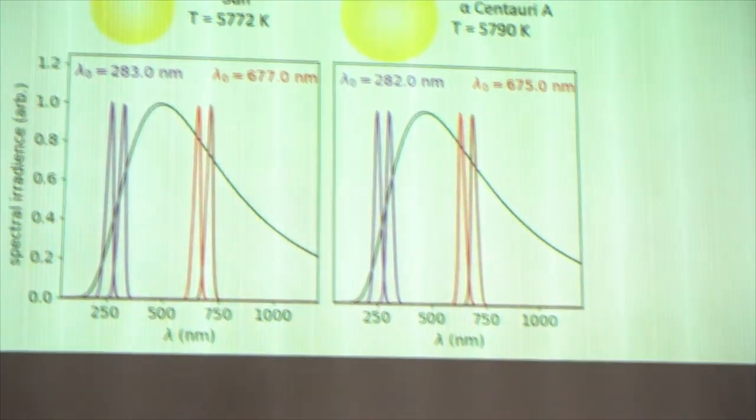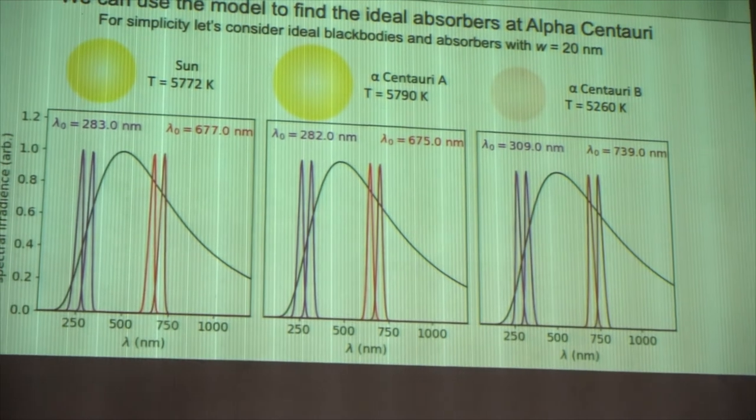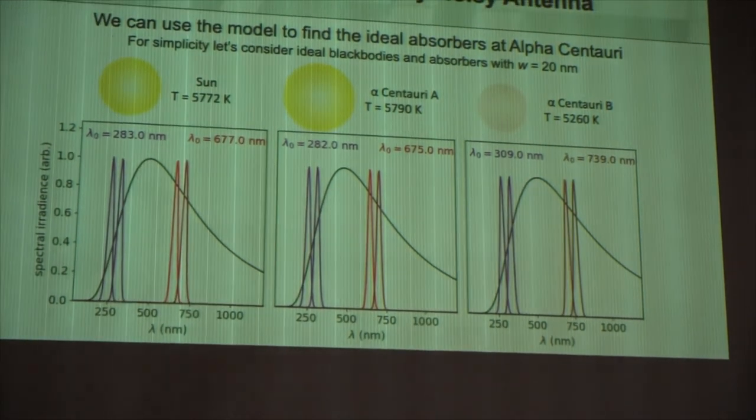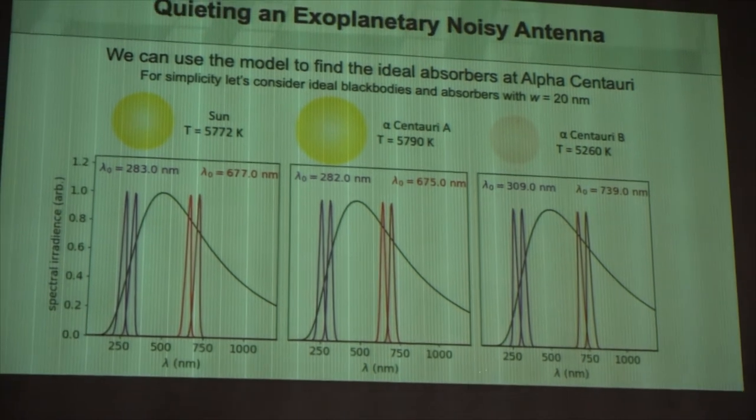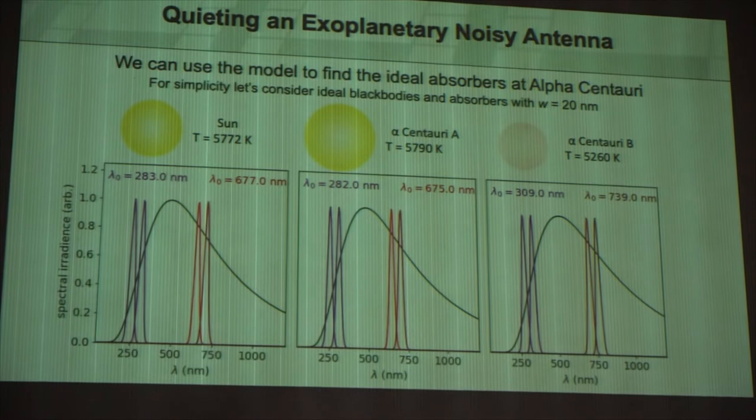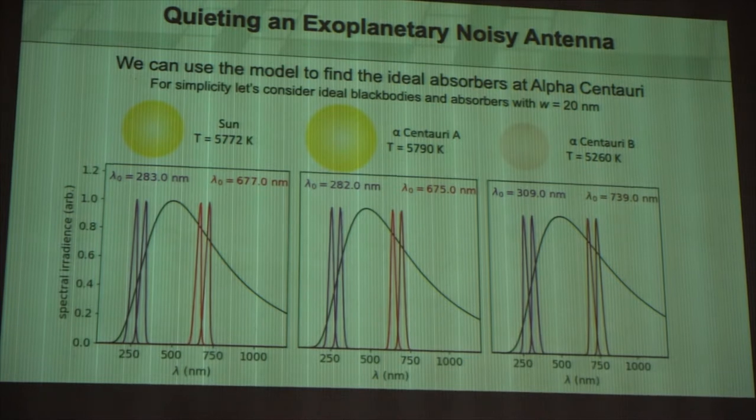When we looked at Alpha Centauri A as an example, it has a pretty similar temperature, and so you get a pretty similar answer to Earth. But if you take another star like Alpha Centauri B, it's a little bit cooler. And so it shifts that ideal spectrum to the red. And then it predicts that these peaks should then also correspondingly shift. So we're no longer necessarily getting the same color of plants because we're avoiding a different peak of that solar spectrum.